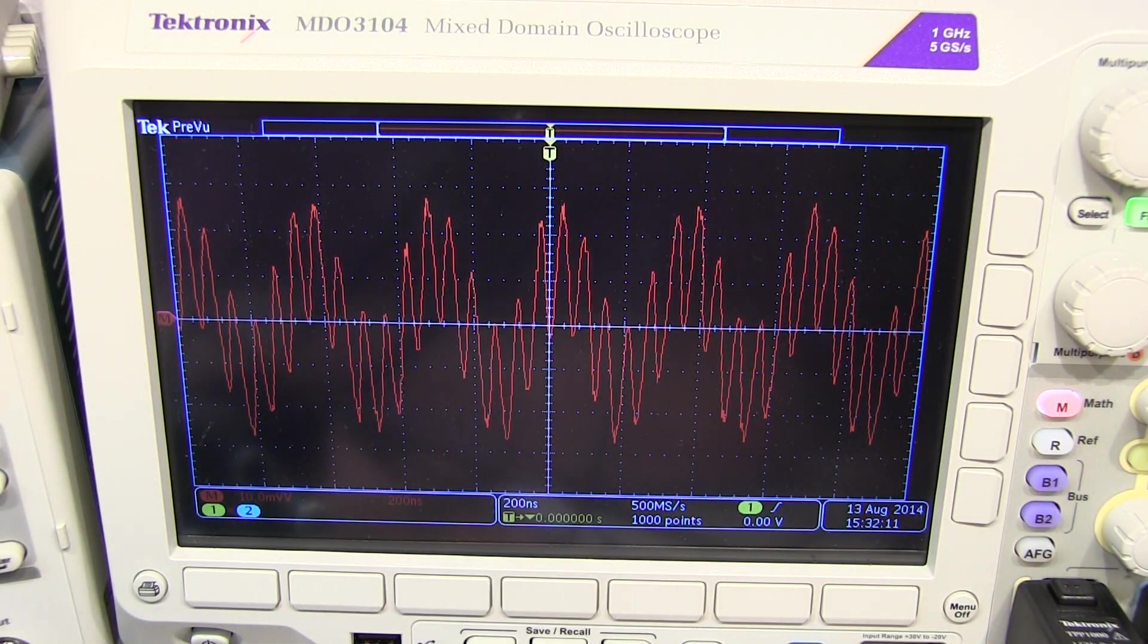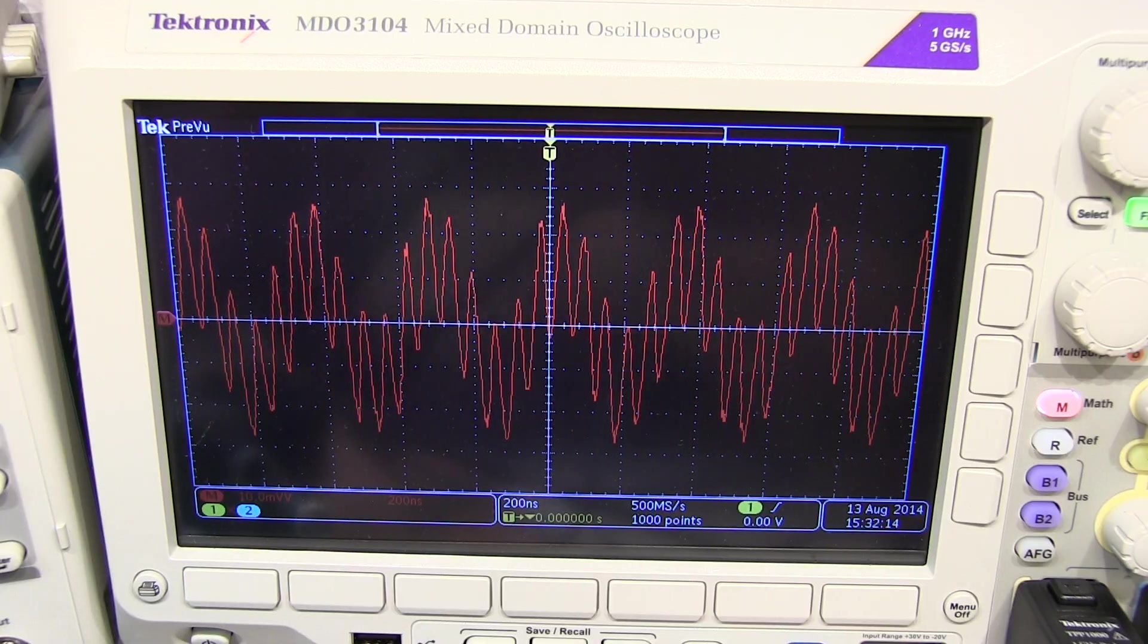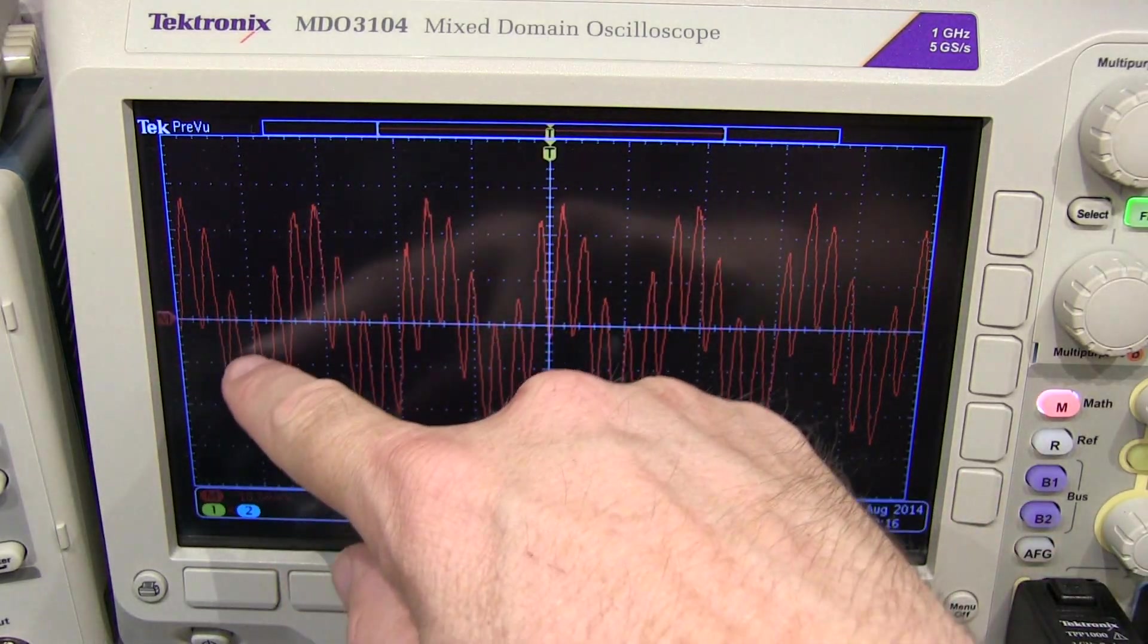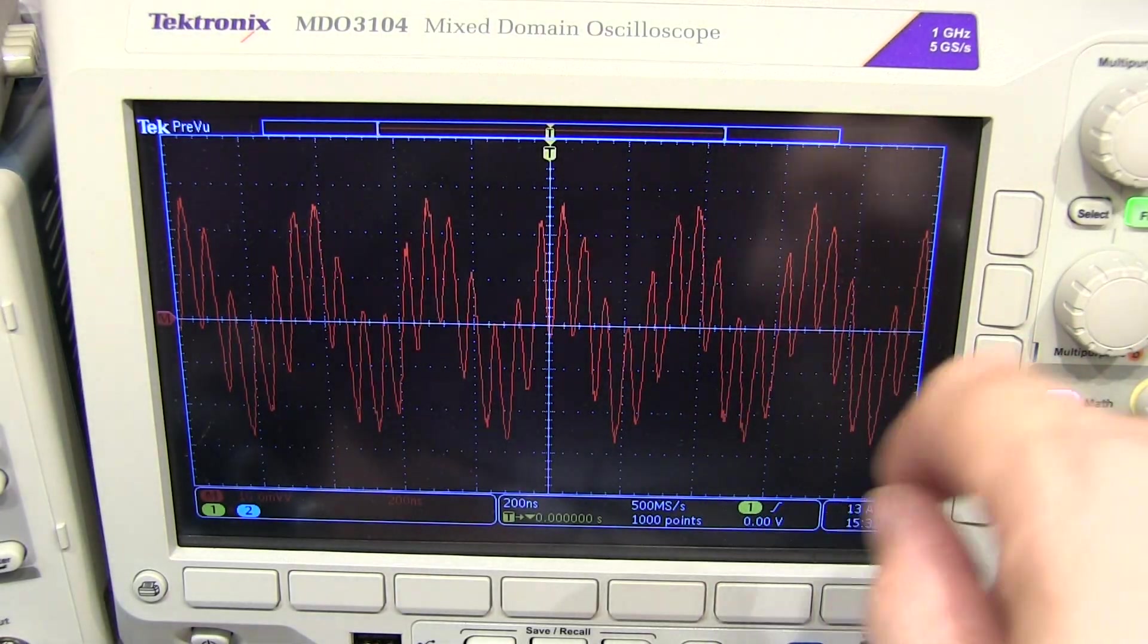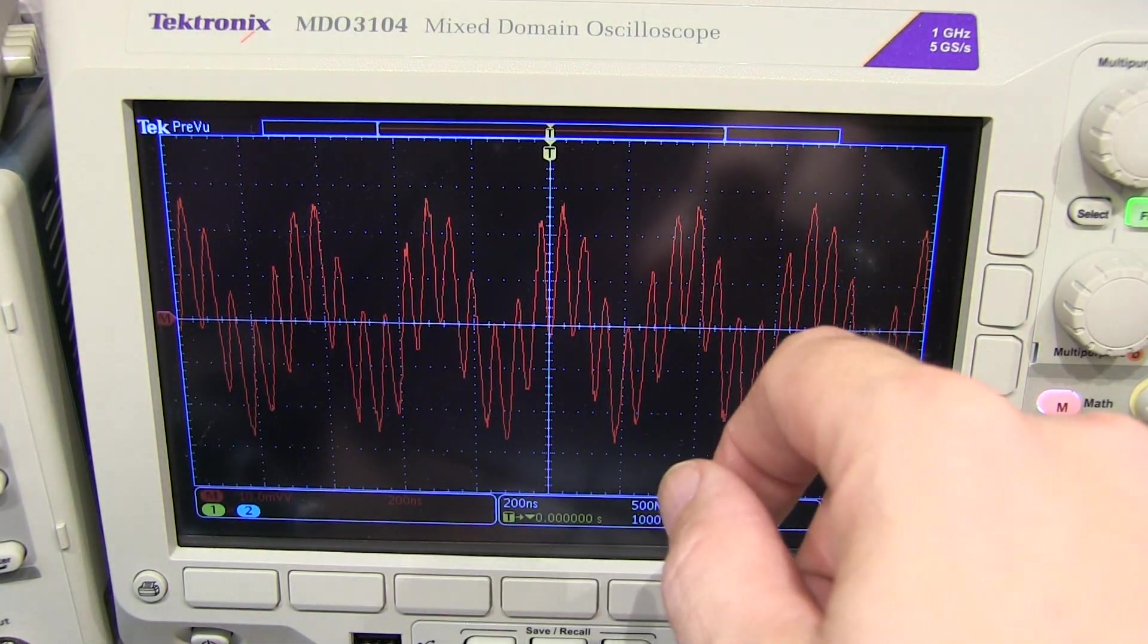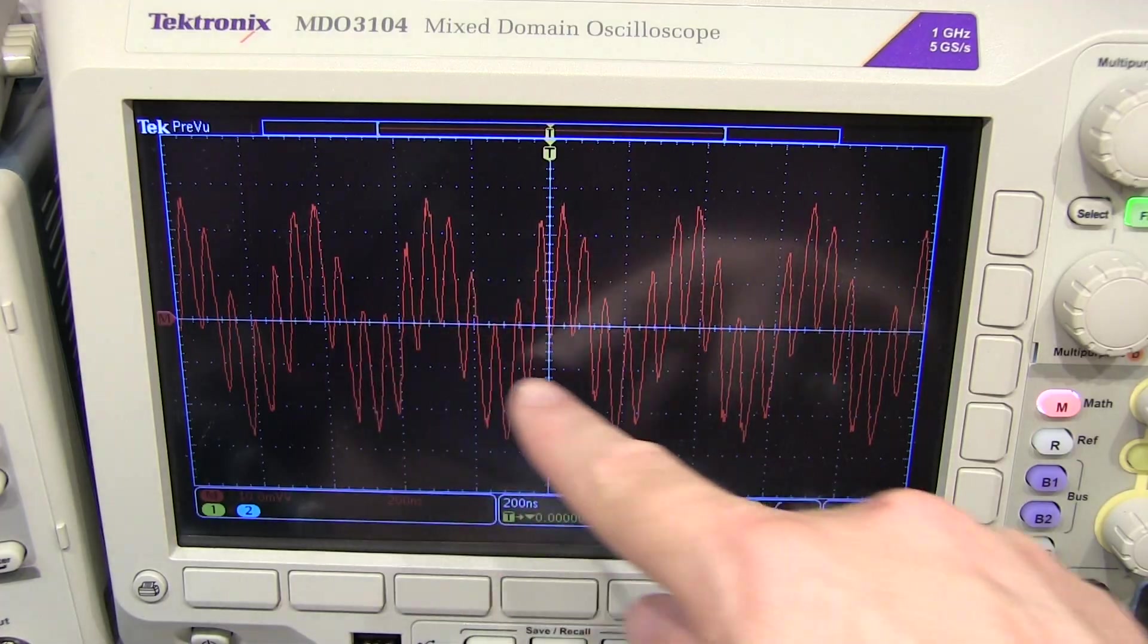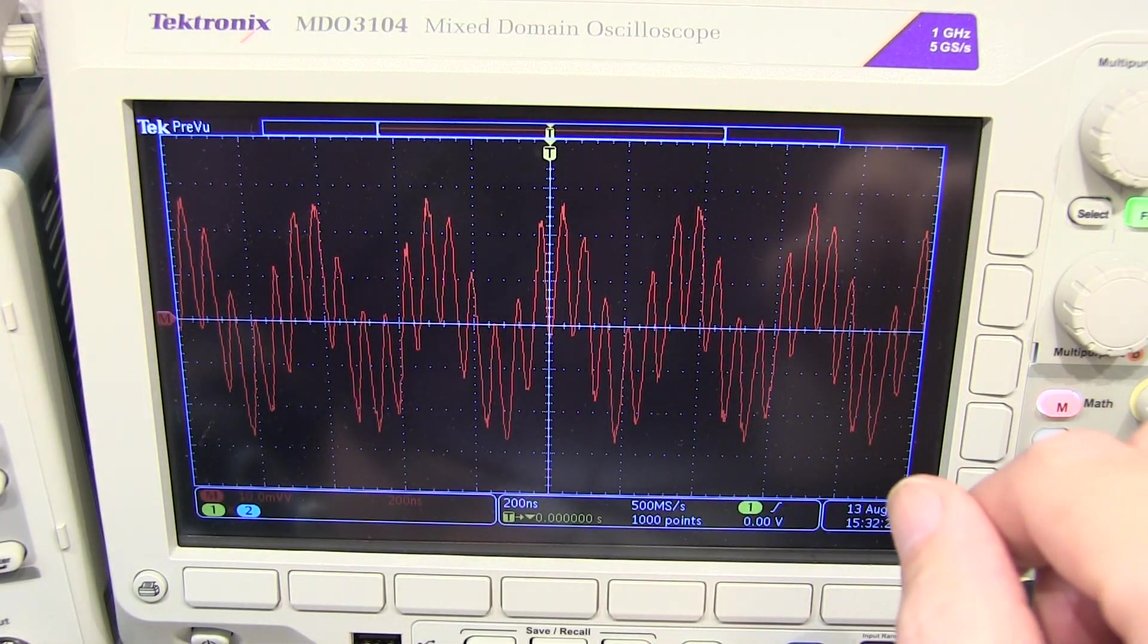And you can kind of see now there are two primary frequency components in here. We've got this lower frequency variation going on here and that's our difference frequency. That's the 10 megahertz minus 7 megahertz or 3 megahertz frequency.